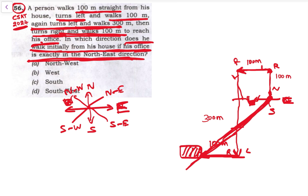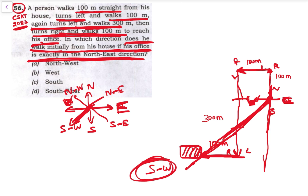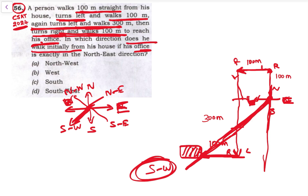So the office is in the southwest direction from home — point C is on the south-A side. The office is in the southwest direction. But the question says the office should be in the northeast direction. So we need to go from southwest to northeast.